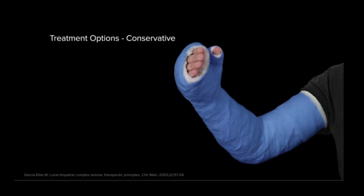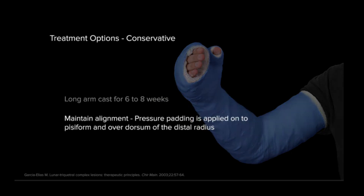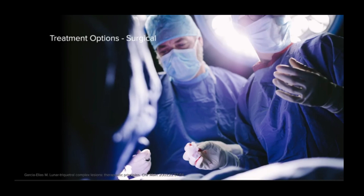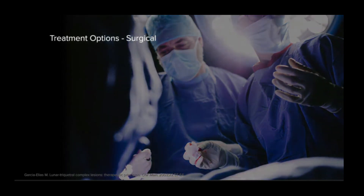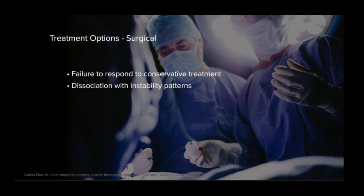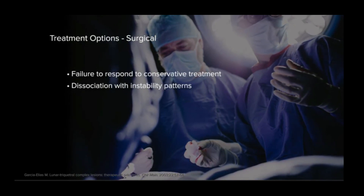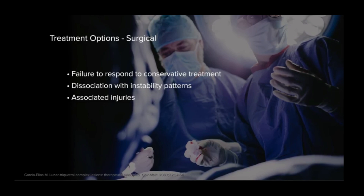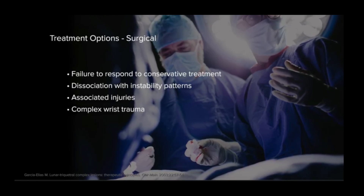The majority of isolated injuries with no static instability pattern are treated conservatively with a long arm cast for six to eight weeks. Special pressure padding is applied on the pisiform and over the dorsum of the distal radius to ensure proper alignment is maintained. Surgical repair or reconstruction should be considered when the injury fails to respond to conservative treatment, when dissociation with instability pattern occurs, or when the injury is associated with other injuries such as complex wrist trauma.